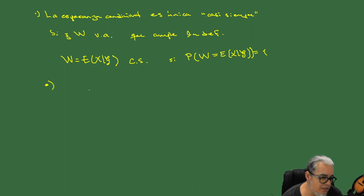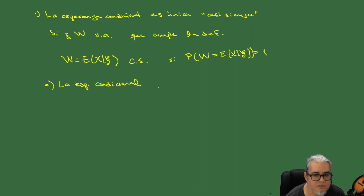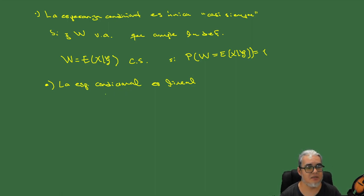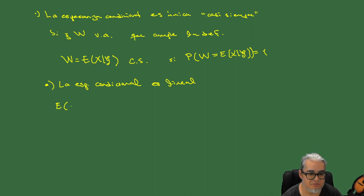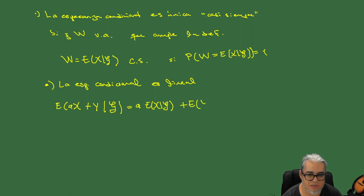La segunda propiedad es que la esperanza condicional es lineal. Es decir, se porta bien con las combinaciones lineales de variables aleatorias. Si hacemos la esperanza condicional de AX más Y dado alguna G elegante, esto es A por la esperanza condicional de X dado G, más la esperanza condicional de Y dado G.